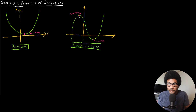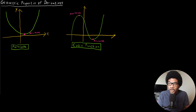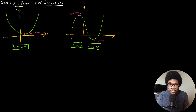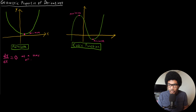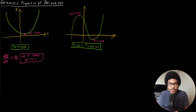Minima and maxima have the property that the derivative is equal to zero at those points. The derivative is essentially the slope of the tangent line at a point. If you draw a tangent line to the minimum of this parabola, it's going to be a straight line with a slope of zero. The same is true for the maximum and minimum on the cubic. So one geometric property of the derivative is that at a maximum or minimum, the first derivative equals zero.